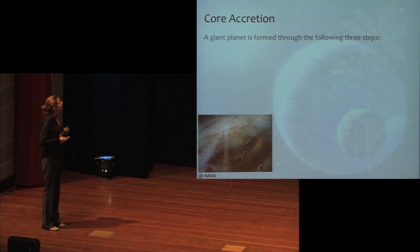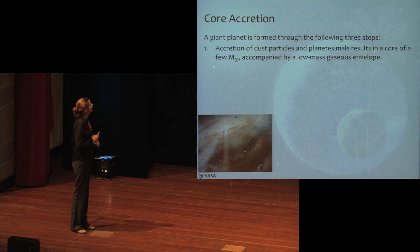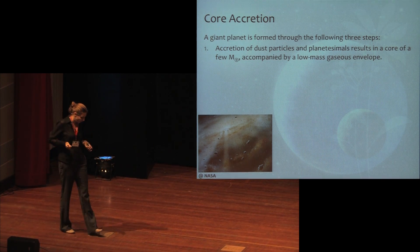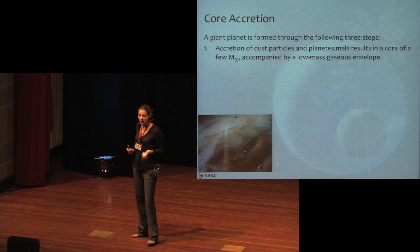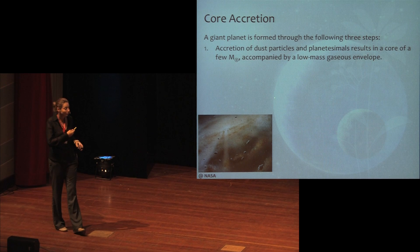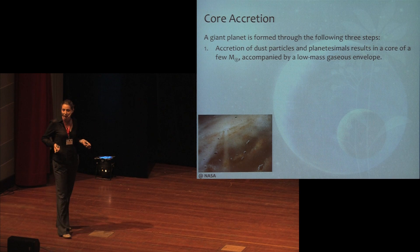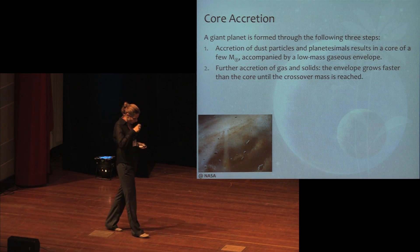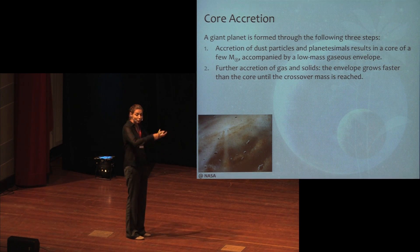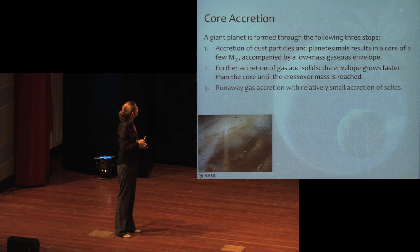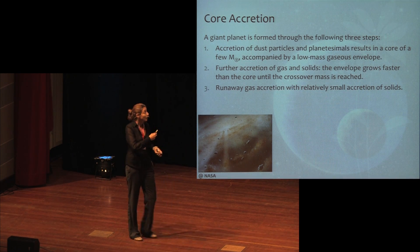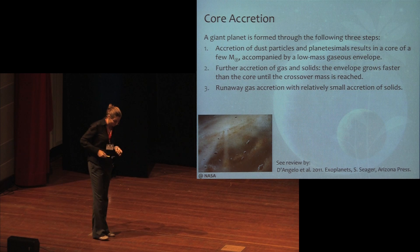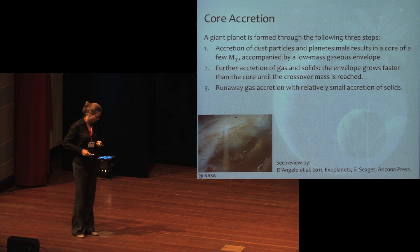Summarizing core accretion quickly: there are three main stages. First, accretion of dust particles and planetesimals until a core forms. When the core mass is large enough, it slowly accretes gas — similar to terrestrial planet formation. Then further accretion of gas and solids occurs, the envelope grows slowly, but then catches up with solid growth. In the last stage, we have runaway gas accretion with relatively small solid accretion rate — this is when we really form the giant planet. For more details, see the review by D'Angelo et al. in Sara Seager's book.